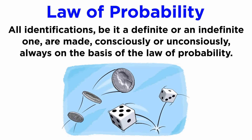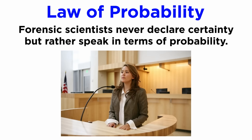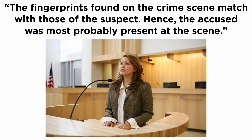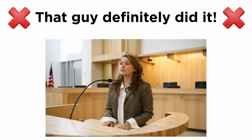The fourth principle is the law of probability. It states that all identifications, definite or indefinite, are made—consciously or unconsciously—always on the basis of the law of probability. Forensic scientists never declare that an identification is certain; they always speak in terms of probability. An expert in the courtroom will use a phrase like: the fingerprints found on the crime scene match with those of the suspect, hence the accused was most probably present at the scene.